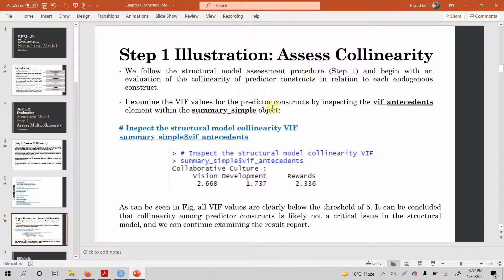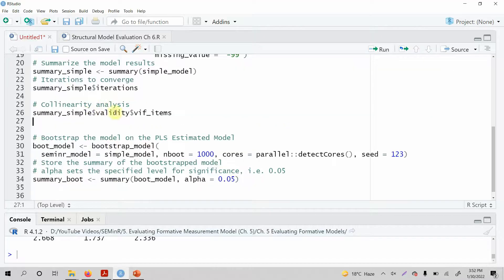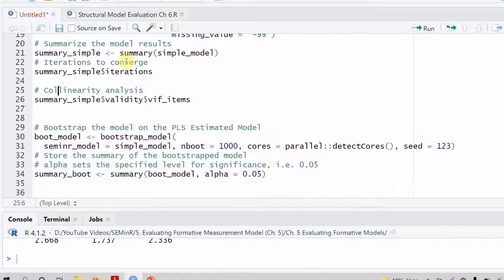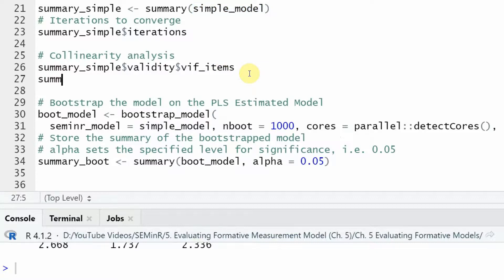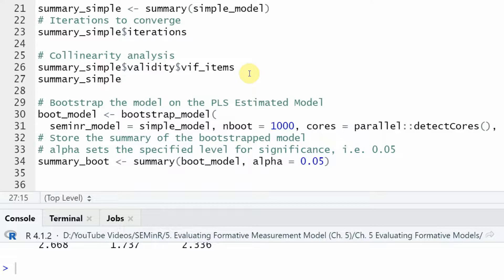In order to assess the collinearity, what I need to do is I need to simply call in this object that is summary underscore simple, which is already created. This is summary underscore simple holding the estimated model, the summary of the estimated model. And what you need to do is just summary underscore simple dollar sign and we need VIF of antecedents. Click here and then run it.